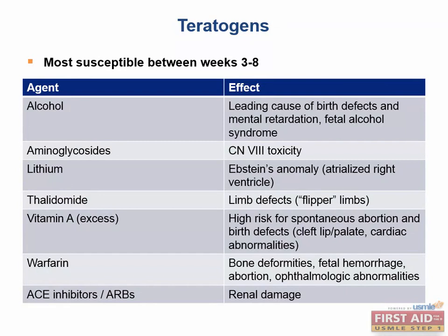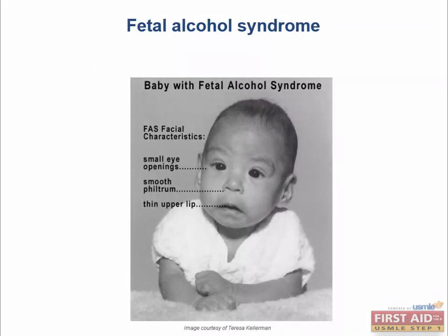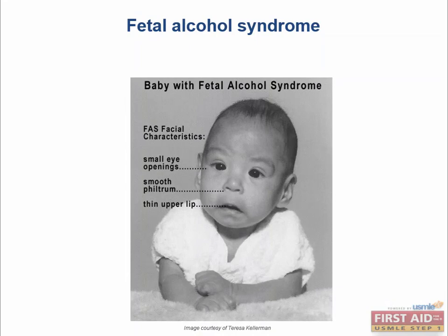Fetal alcohol syndrome in its most minor form can present with a smooth philtrum — loss of that concavity between the upper lip and nose — as well as widely spaced eyes, called hypertelorism, or small eye openings. Alcohol is the most common cause of mental retardation. In its most severe form it can cause holoprosencephaly, which is also seen with Patau syndrome and Sonic the Hedgehog gene mutations, but also in very severe fetal alcohol syndrome.